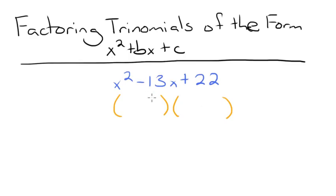Then, put the x's where they belong, since x times x is x squared. Finally, we need to find two numbers that multiply to 22 and add to negative 13.